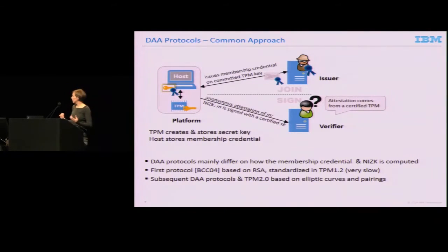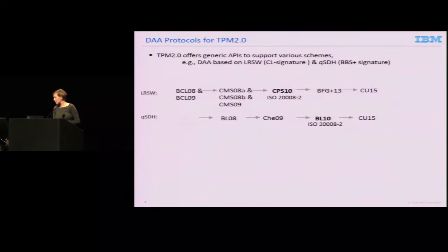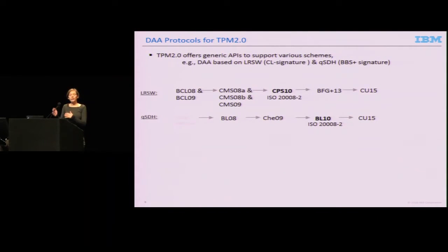Different DAA protocols mainly differ on the signature scheme used by the issuer to give the blind membership credential. The most recent TPM specification uses protocols based on elliptic curves and pairings. The TPM offers very generic APIs, so there are a lot of different protocols that fit the structure. The work can be split into two lines: one based on Camenisch-Lysyanskaya signatures or the LRSW assumption, and one on BBS plus signatures and the QSDH assumption. Some are ISO standardized. We looked at these protocols and tried to find out if we can prove them secure in our formal model.